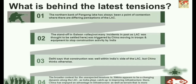There were not many incidents in the past in Galwan Valley as the LAC was thought to be settled there. The standoff was triggered by China bringing in troops and equipment to stop India's construction activity. Delhi says that construction was well within India's side of the Line of Actual Control, but China thinks quite the opposite. The broader context is the changing dynamic along the LAC as India plays catch-up in improving infrastructure, while China has enjoyed an advantage in infrastructure and terrain favorable to mobilization.